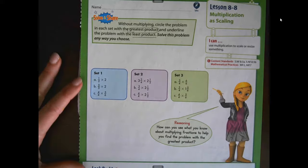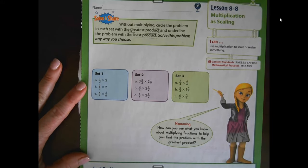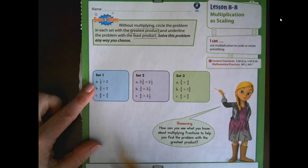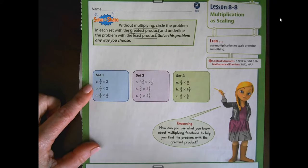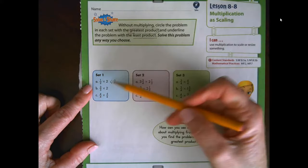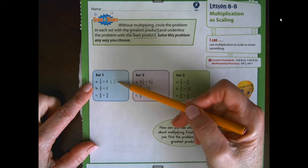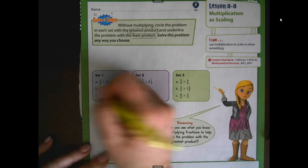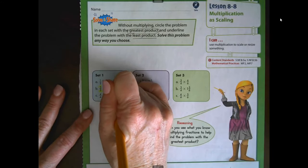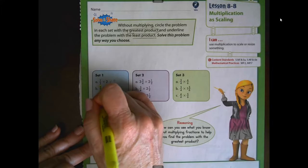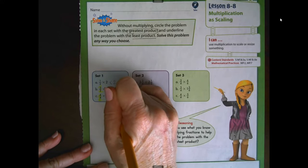Let's look at our problem again. Set A — we need to find the expression that gives us the least value and the greatest value. If I multiply two times one-half, I have one factor with a value less than one, so my answer is going to be less than two. If I multiply two times one, it gives me itself. So if I multiply two times a fraction less than one, the product is going to be less than two. Next, three-thirds is a form of one, so multiplying a number times one equals itself. And then five-sixths times four-fourths — four-fourths is a form of one — so that answer is going to be five-sixths itself.